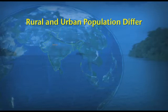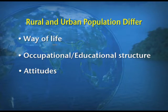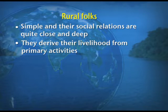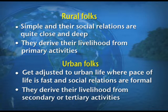Rural and urban population differ from each other under three heads: the way of life, the educational structure and occupational structure of the people, and the attitudes of the people. Rural folks are very simple, their social relations are quite close and deep, and they derive their livelihood from primary activities. Whereas urban folks are adjusted to urban life where pace of life is fast, social relations are very formal, and they derive their livelihood from secondary or tertiary activities.